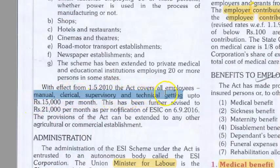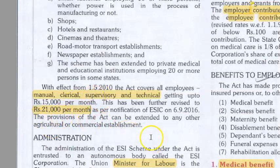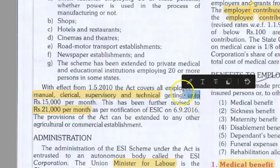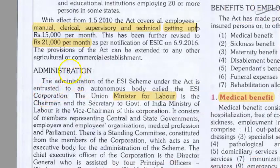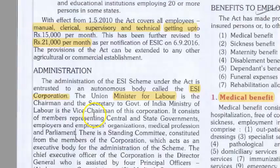There is a salary cutoff. Employees should be earning ₹21,000 per month or less. This is the cutoff. This act is under the Union Ministry of Labor, and it is administered through an autonomous body called the ESI Corporation. Two terminologies to know: ESI Corporation and Ministry of Labor.